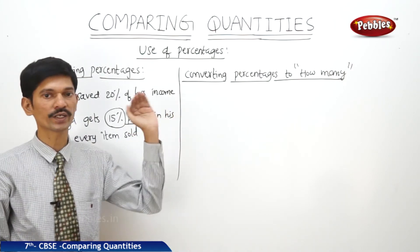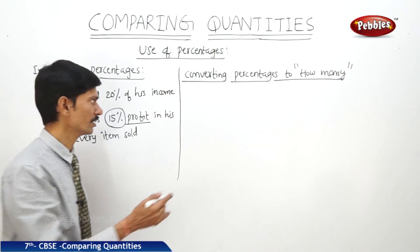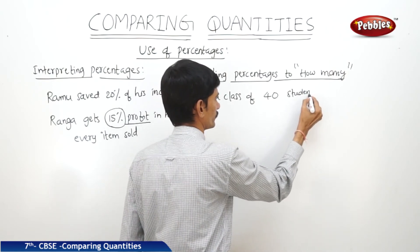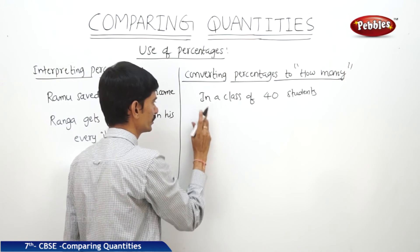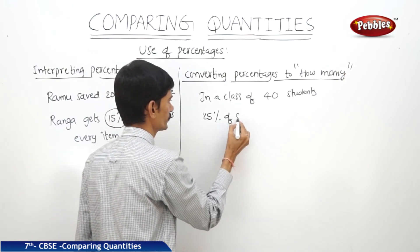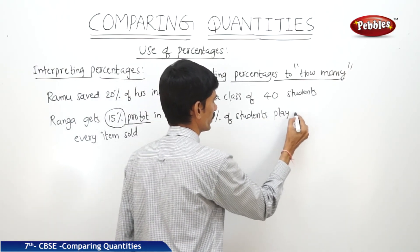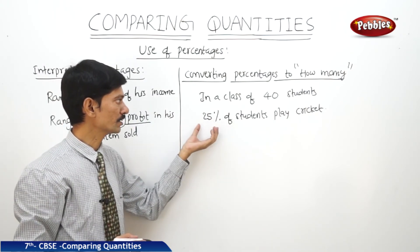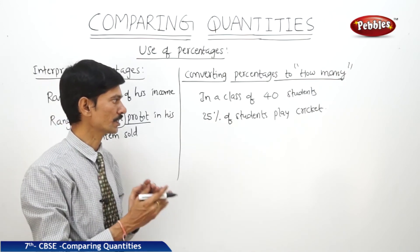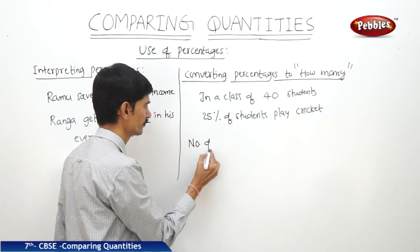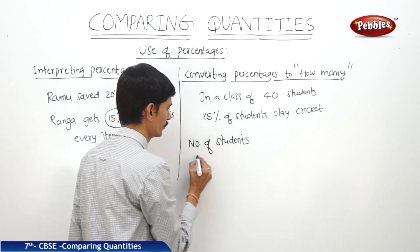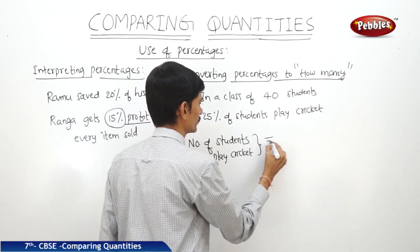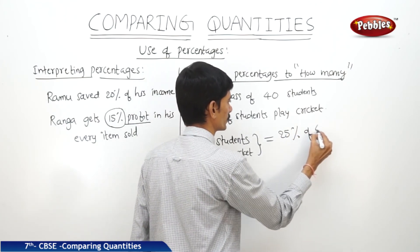How to convert the percentage to how many? For example, in a class of 40 students, 25% of students play cricket. We don't know how many students play cricket, but we know the percentage. Let us find the number of students who play cricket. That is 25% of the total students, which is 40.